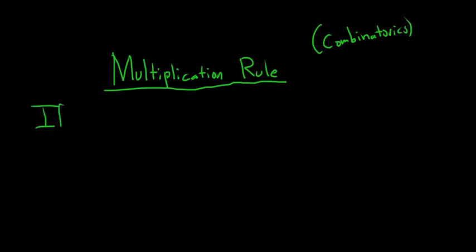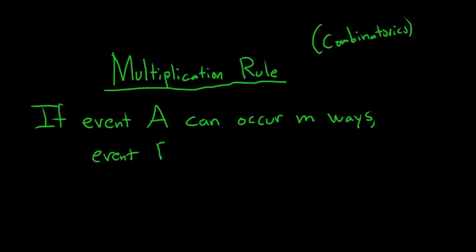So if, say we have two events. If event A can occur M ways, so there's M ways to perform this event, or M ways this event can occur, and then event B can occur N ways.